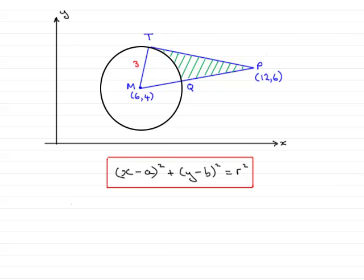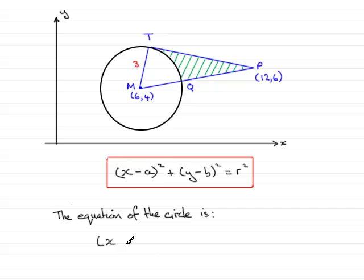So, therefore, to answer this, what we would do is say that the equation of the circle is — we have the centre coordinates M, which are 6 and 4, so it'd be x minus 6, all squared, plus y minus 4, all squared, equals the radius squared.